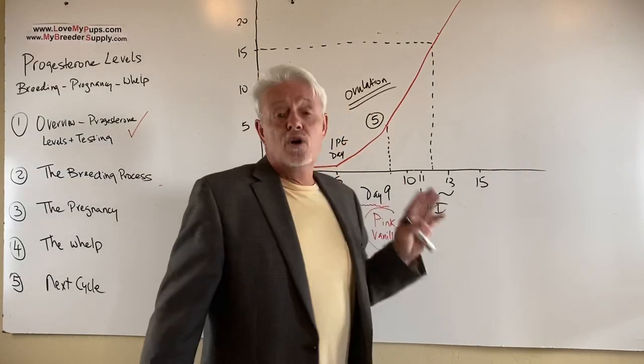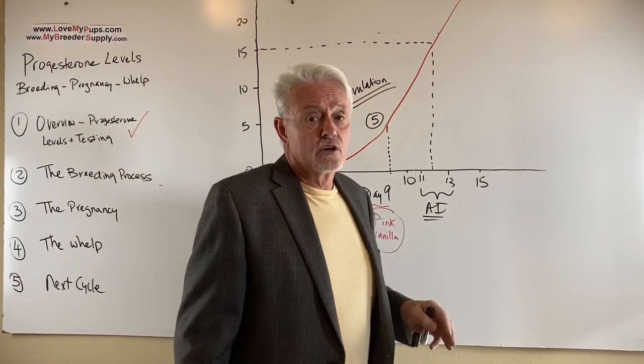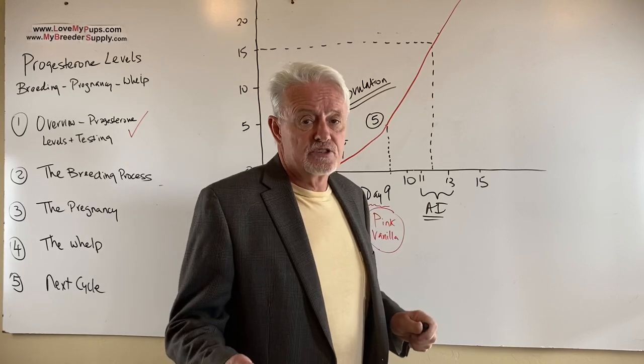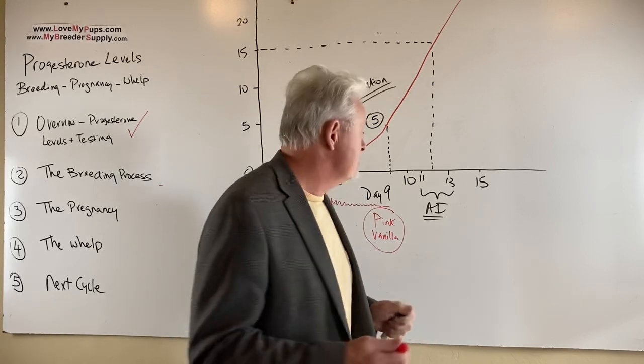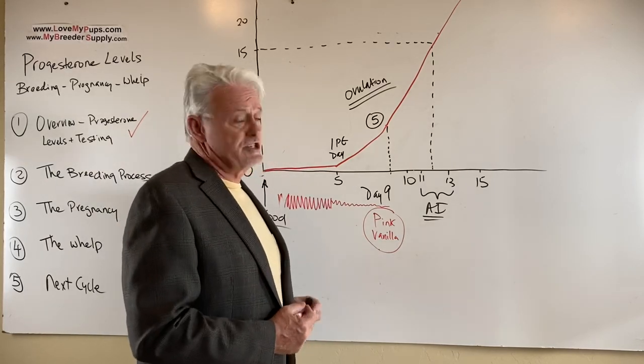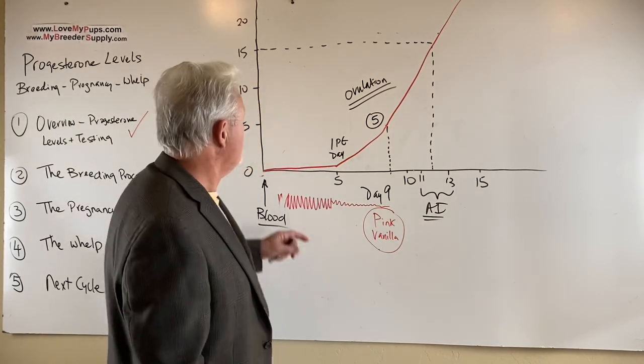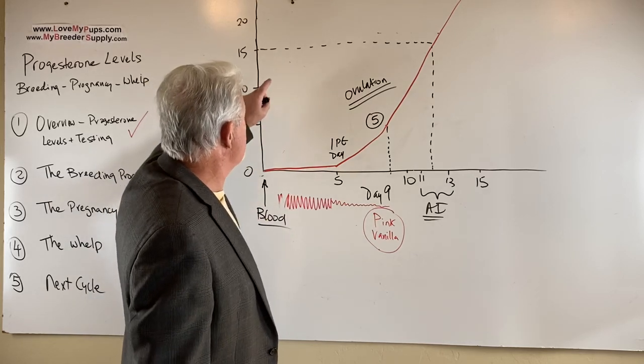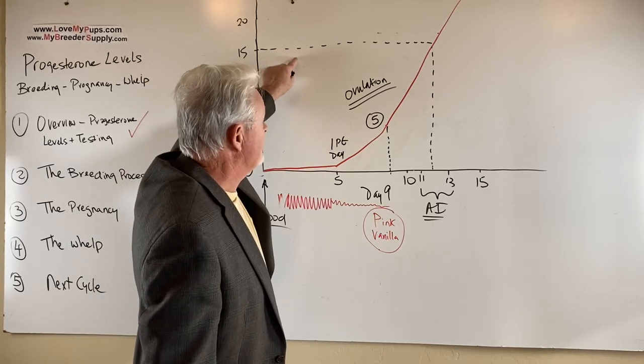And that will work probably for 70% of dogs. Trouble is, is the other 30% are not getting pregnant or having small litters because that is not a reliable enough way of doing it. What we want to do is we want to get a progesterone test done. And we want to find out when that dog is at a level of 15.